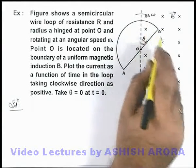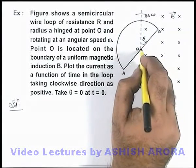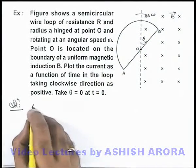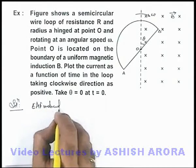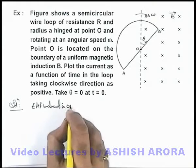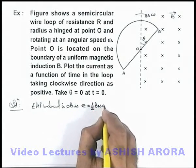This can be given by the motional EMF of a rotating rod about one point. So the EMF induced in OB is half B omega a squared.